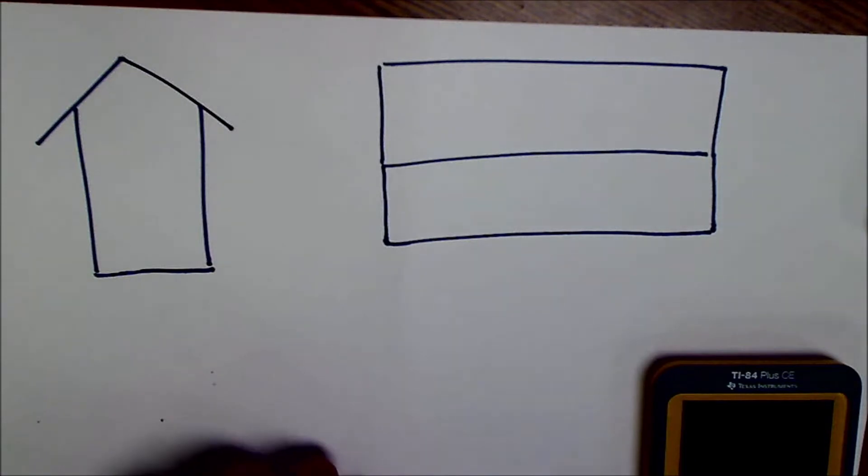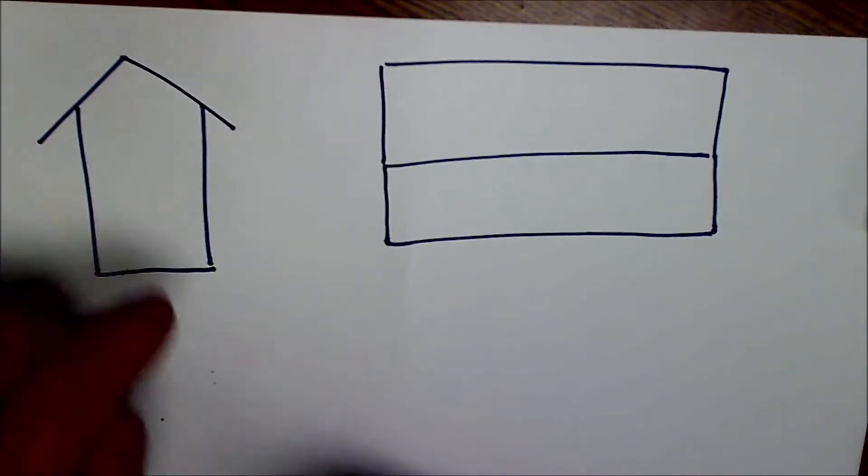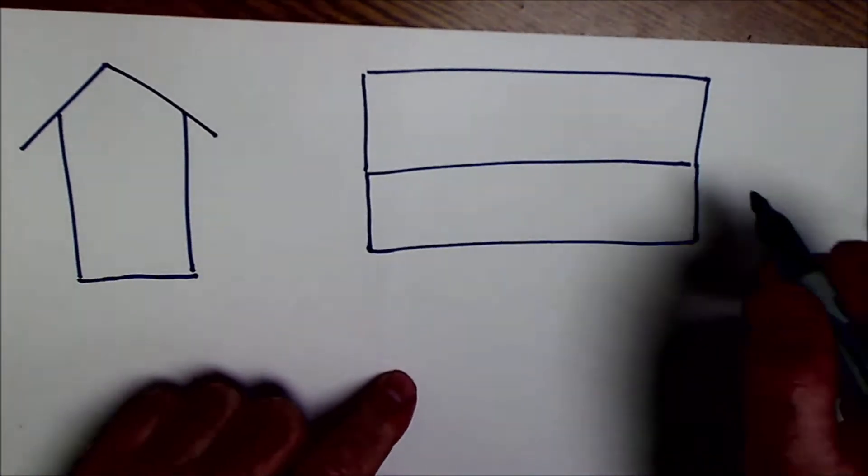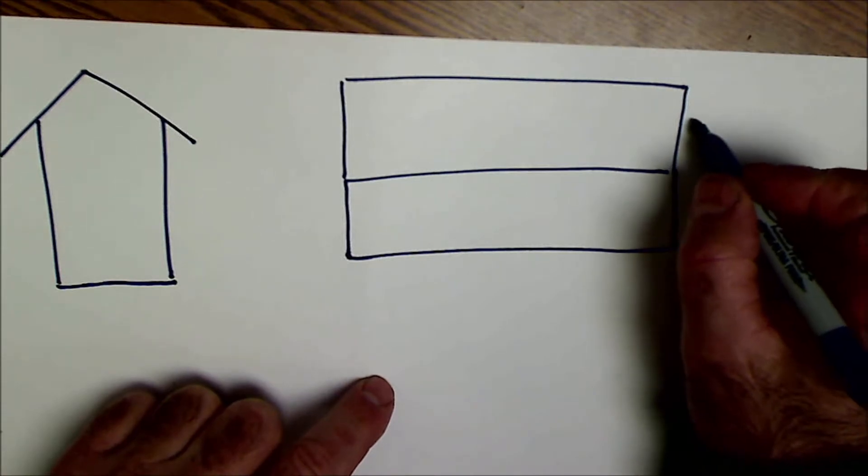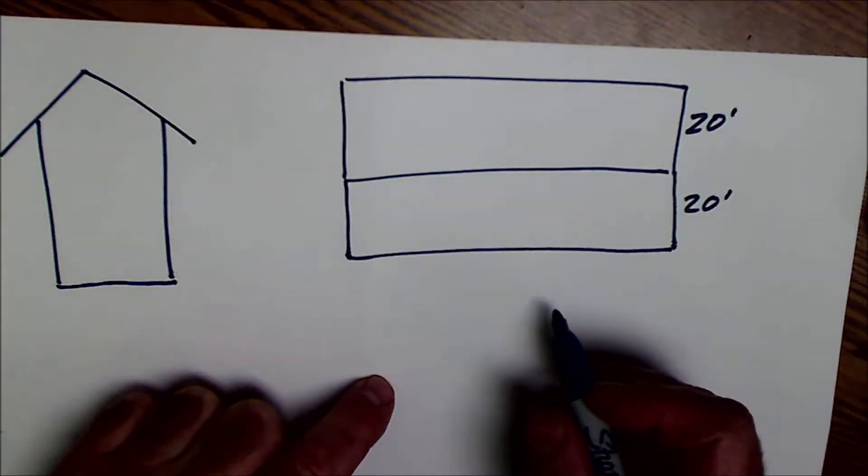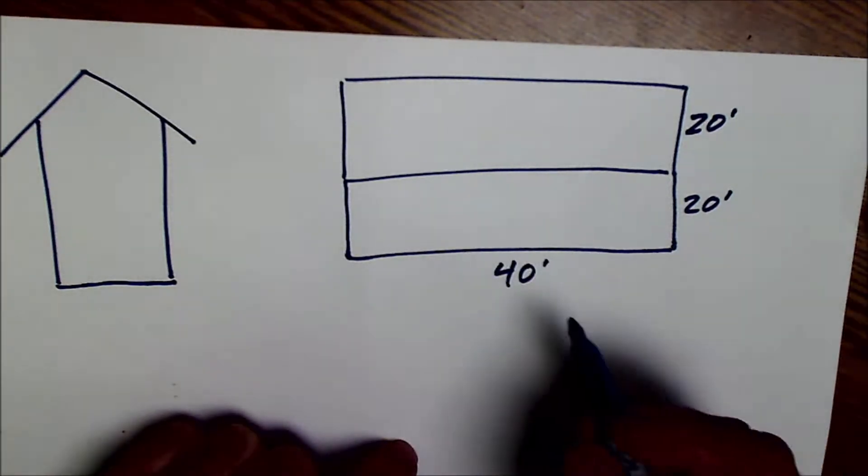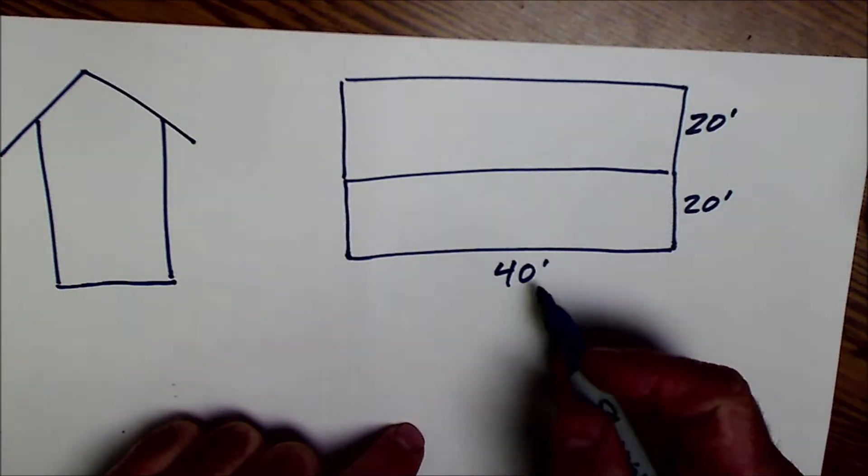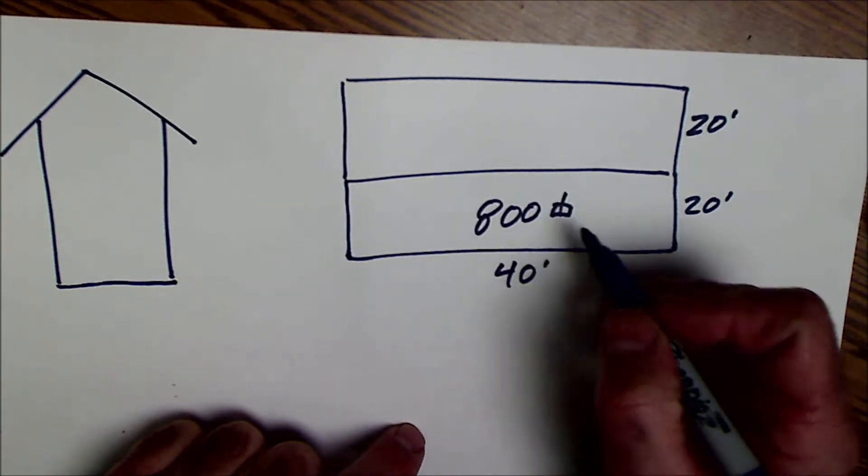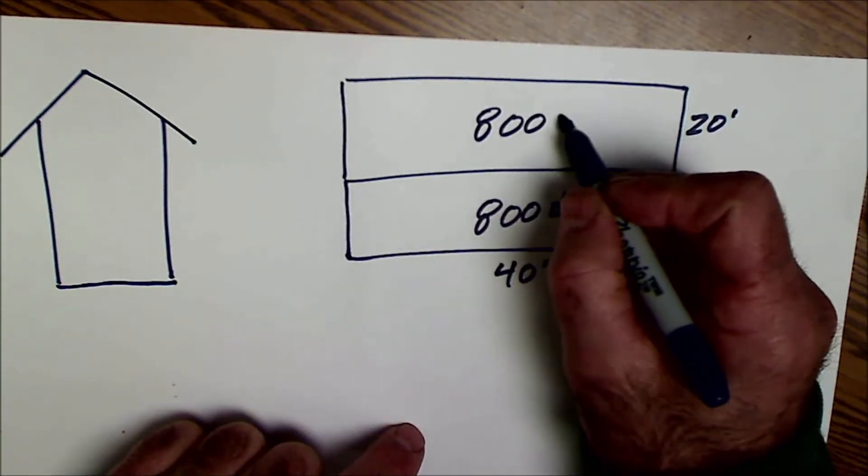Let's start with the easy example here. Let's say you have a gable end on both sides of the roof. It looks like this. You're up on the roof, so you're measuring the dimensions. You measure this out to be 20 feet, and this side is 20 feet, and then the overall length of it is 40 feet. So you're going to multiply 40 times 20 to get 800 square feet right here.